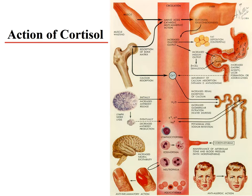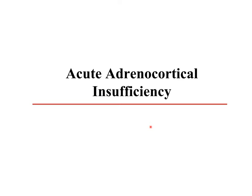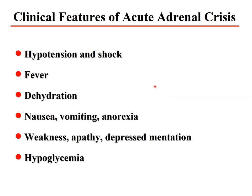When we do not have normal adrenal cortical function — adrenal cortical insufficiency — there are two types: acute and chronic. In the acute situation, called adrenal cortical crisis, characteristic features include hypotension, circulatory shock, fever, dehydration, nausea, vomiting, anorexia, weakness, apathy, depression, and hypoglycemia. The leading symptom is usually circulatory shock.